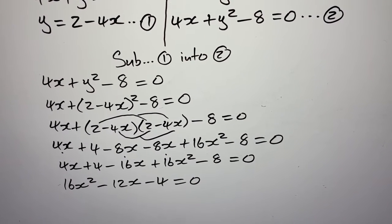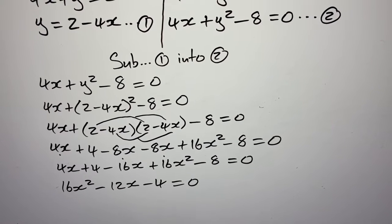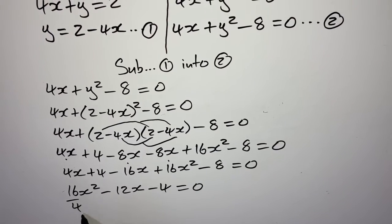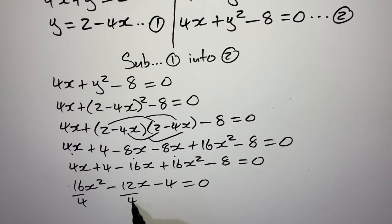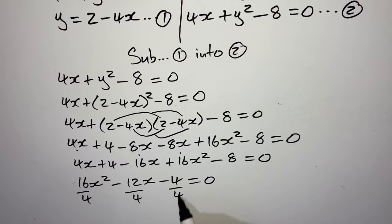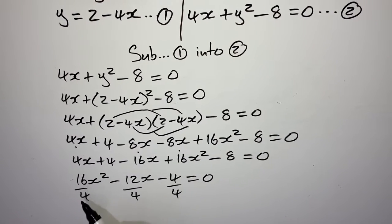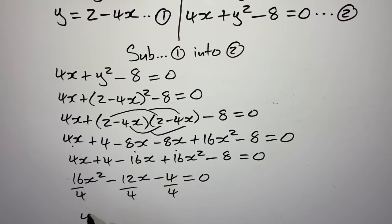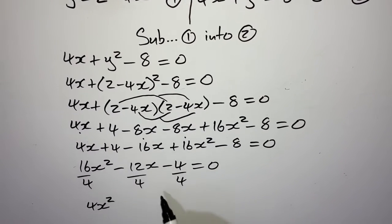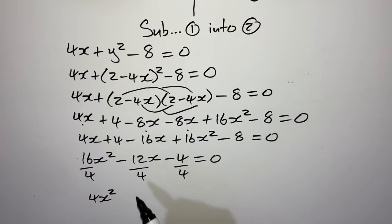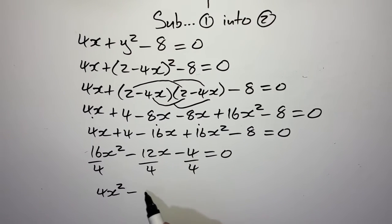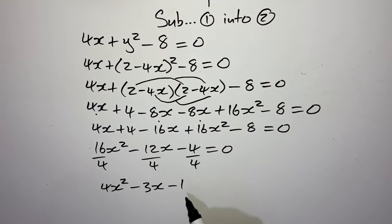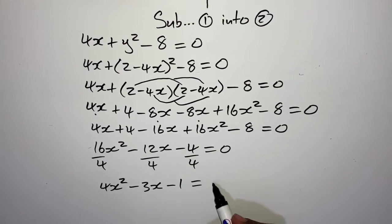Divide by 4 throughout. How many 4s are in 16? You find 4. So 4x squared. The 12 divided by 4 gives 3. The 4 divided by 4 gives negative 1. We equate that to 0, giving us: 4x squared minus 3x minus 1 equals 0. From here you can either use the quadratic formula, or if you can, you can go on to find the factors.